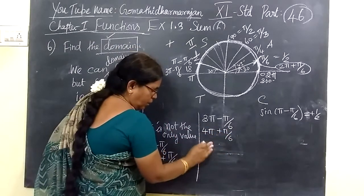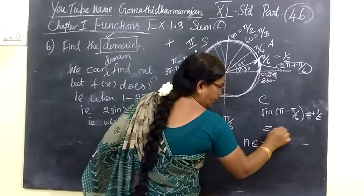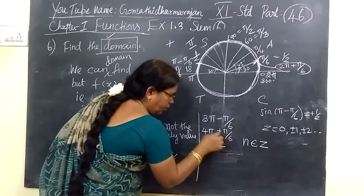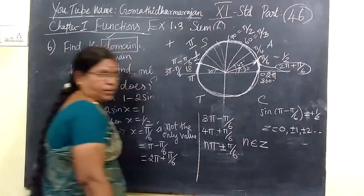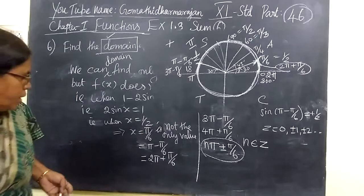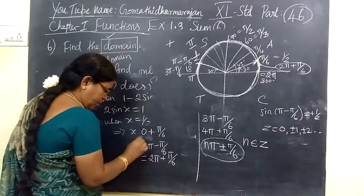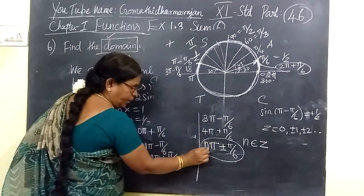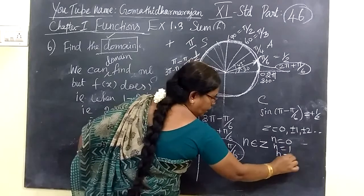So we can write the general solution as nπ, where n belongs to Z. We can write n = 0, ±1, ±2, and so on. So in general, x equals nπ plus or minus π/6. Listing values: n equal to 0 gives π/6; n equal to 1 gives π plus or minus π/6; n equal to 2 gives 2π plus or minus π/6, and so on as the third value.